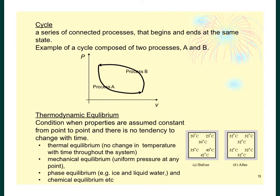Alright, next we have what does it mean by the term Cycle. So if you read here, it says that a series of connected processes that begins and ends at the same state. So we have a PV diagram over here, which later in a later chapter, we are going to have a look at what does it mean by PV diagram.